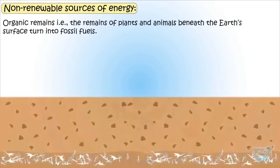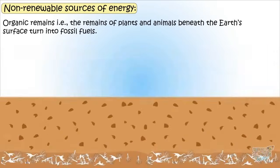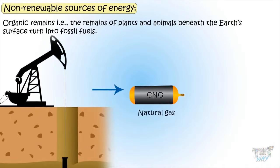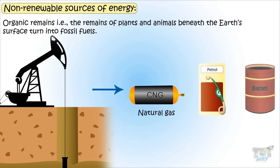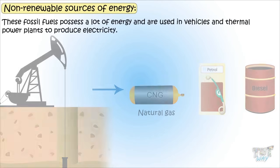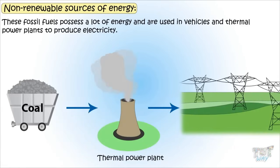Organic remains, that is remains of plants and animals deep beneath the Earth's surface, turn into fossil fuels like natural gas, petrol, and diesel. Due to the immense pressure and temperature over millions of years, these fossil fuels possess a lot of energy and are used in vehicles and thermopower plants to produce electricity.